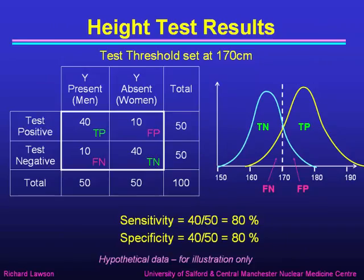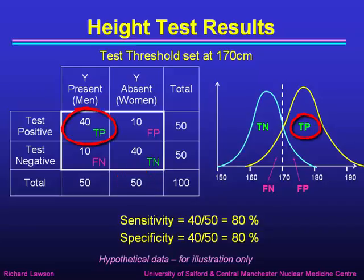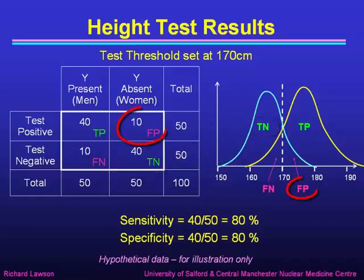Here is our table of results. If we set the test threshold at 170 centimetres, out of our 100 patients — 50 of whom are men and 50 of whom are women — we have 40 true positives (men taller than 170 centimetres), 40 true negatives (women shorter than 170 centimetres), 10 false positives (tall women), and 10 false negatives (short men).